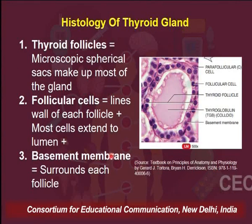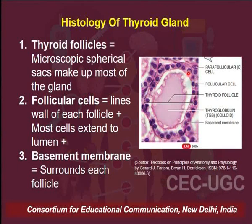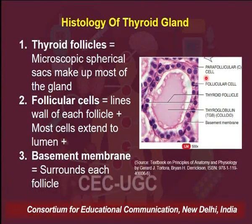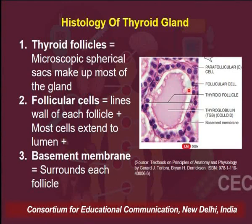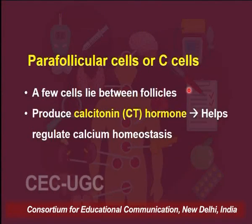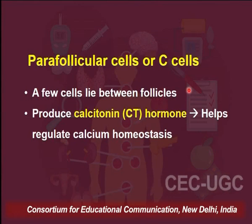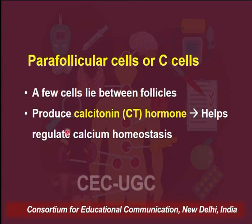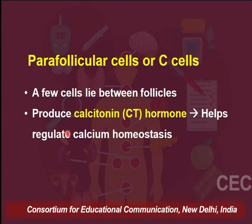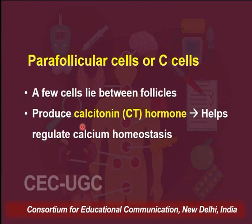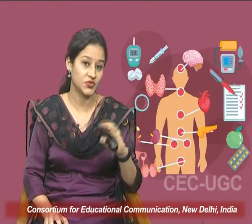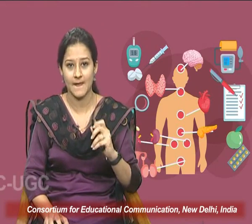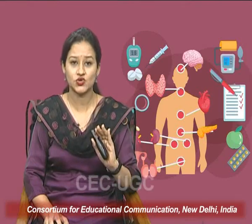Apart from follicular cells, you can also notice some other cells lying outside the follicular cells — these are called parafollicular or C cells. The name 'parafollicular' means on the side of the follicle. These cells lie between the follicles and they produce another important hormone called calcitonin, which is involved in regulating calcium homeostasis — we will study this further when we cover the parathyroid gland. We will stop calcitonin here for now.